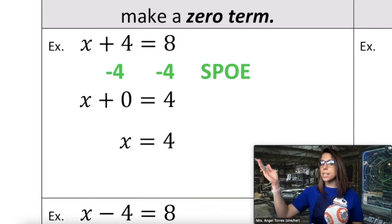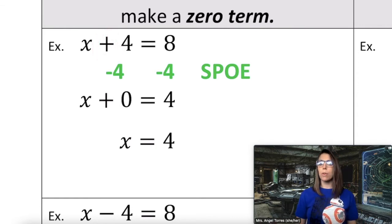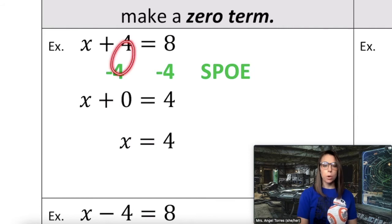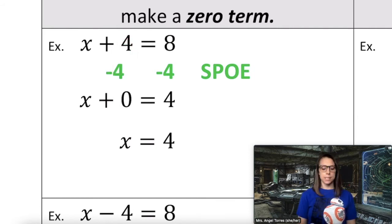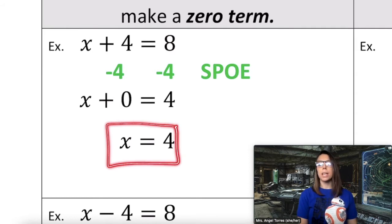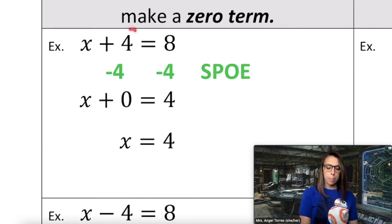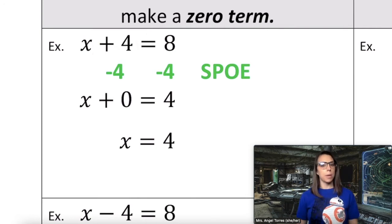As you can see in this first example, this equation is a sum because it has addition. By subtracting 4 from both sides using SPO, 4 minus 4 becomes a zero term, and we're left with x plus 0, or x by itself, and 8 minus 4 is 4. So when the equation has addition with a positive term, we're going to use SPO to make a zero term.